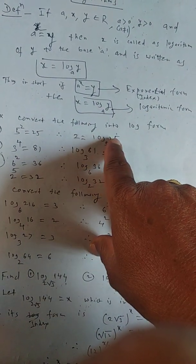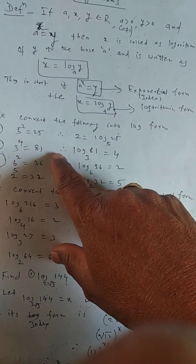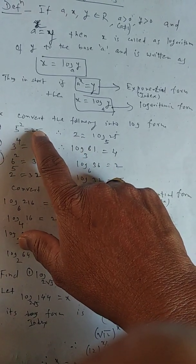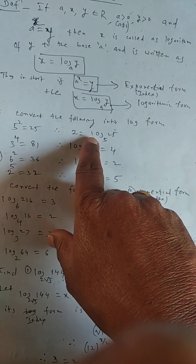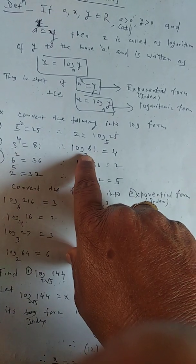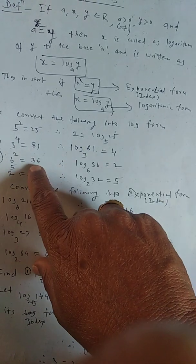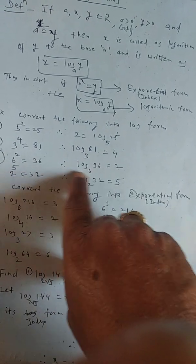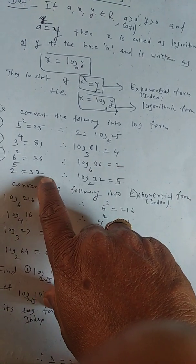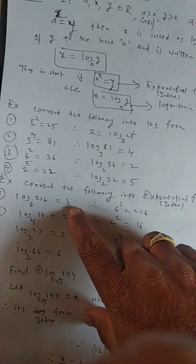Convert the following into log form — examples for one mark or two marks. 5 squared is 25, so it is index form; its log form is 2 = log_5(25). 3 raised to 4 is equal to 81; its log form is log_3(81) = 4. 6 squared is equal to 36; log_6(36) = 2. 2 raised to 5 is equal to 32; log_2(32) = 5.